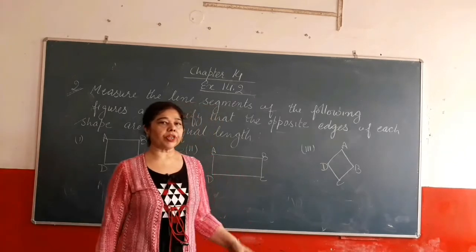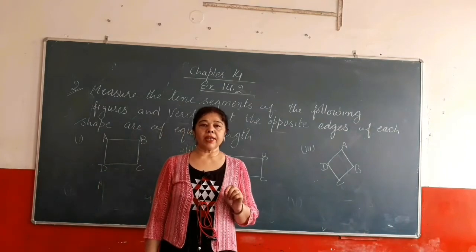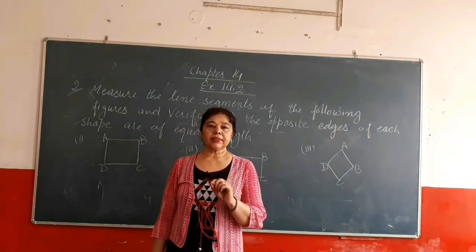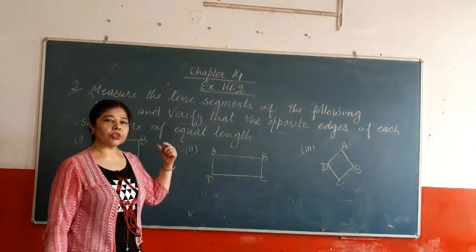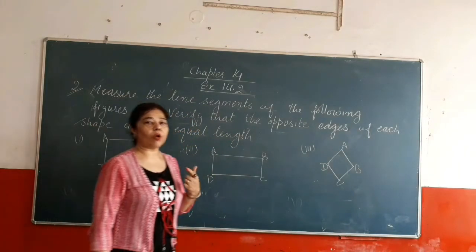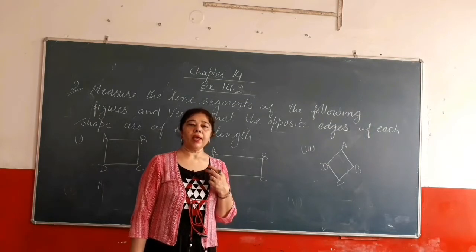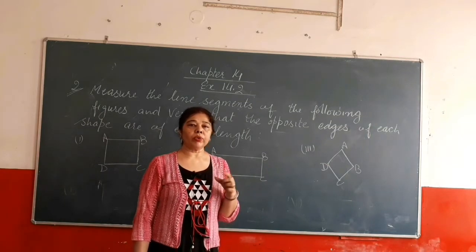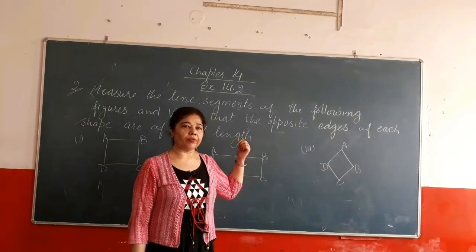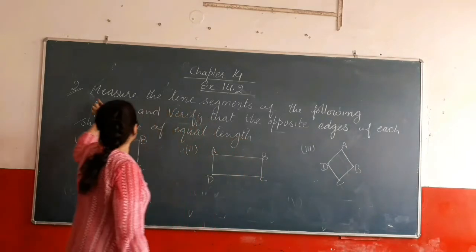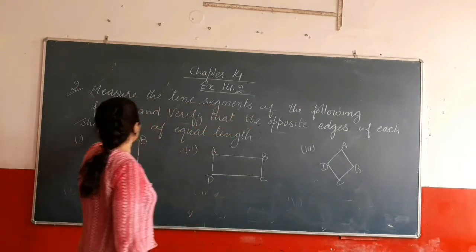In exercise 14.2, the first question is: find the length of the line segments. For this exercise, the first question given in your book has 3 different line segments drawn, and you have to measure their length using your scale.